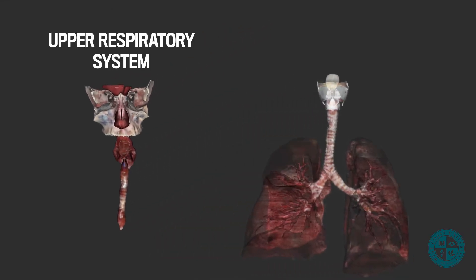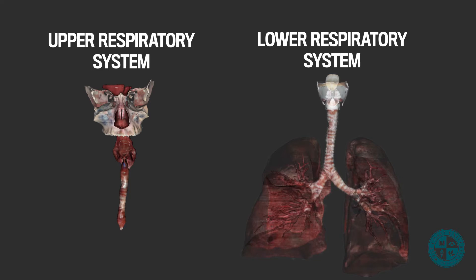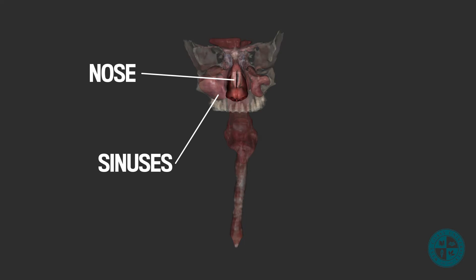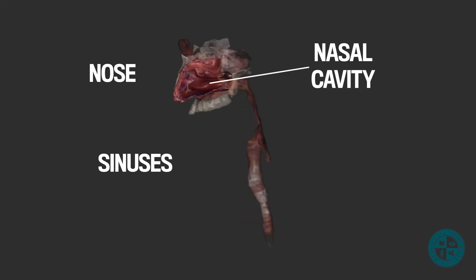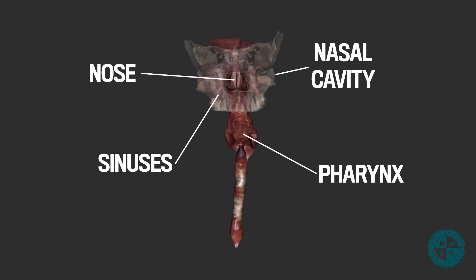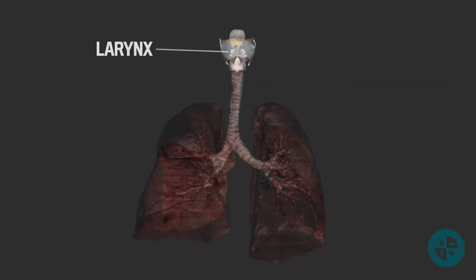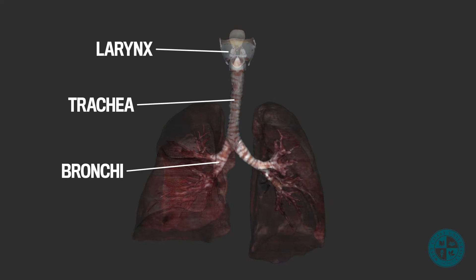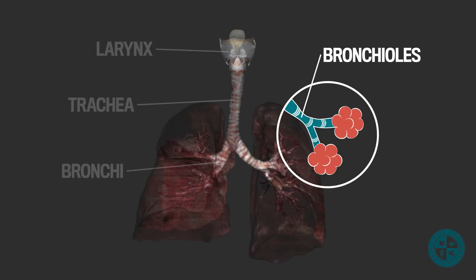The respiratory system can be split into two components: the upper respiratory system and the lower respiratory system. The upper respiratory system consists of the nose, sinuses, nasal cavity, and the pharynx. The lower respiratory tract consists of the larynx, trachea, bronchi, bronchioles, and alveoli.